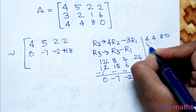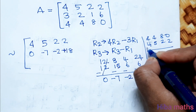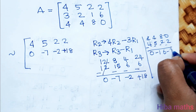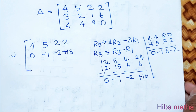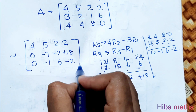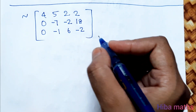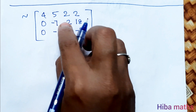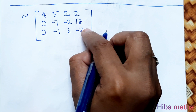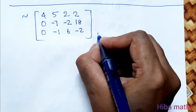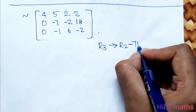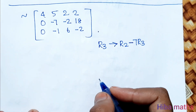Continuing with [4, 5, 2, 2] as row 1. For further reduction, here is minus 1 and here is minus 7, so we multiply by 7. Applying R3 = R2 minus 7 times R3 to eliminate entries. The next step processes the remaining rows accordingly.